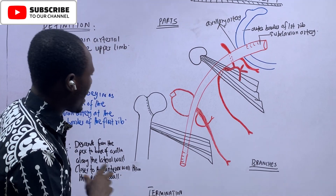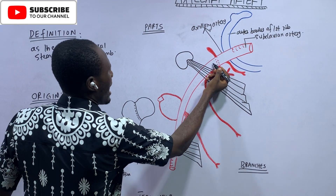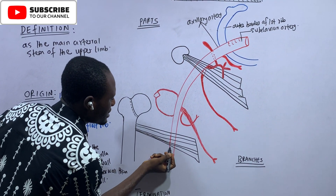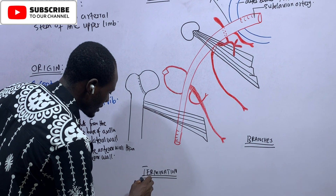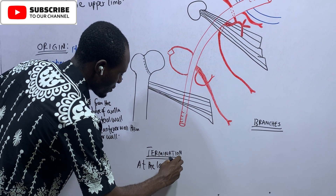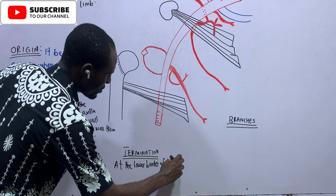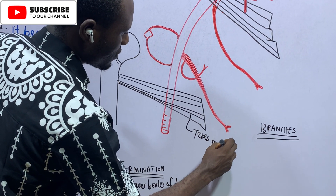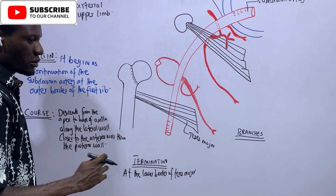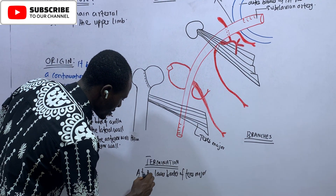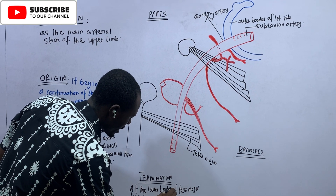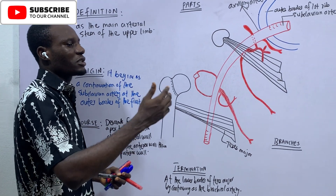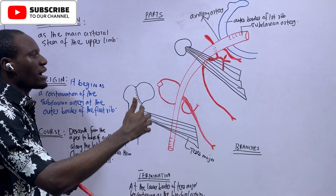Eventually it gets to the arm. Immediately the axillary artery crosses the lower border of the teres major, the name changes — that is the termination of the axillary artery. So the axillary artery terminates at the lower border of the teres major, and once it terminates there, it continues as the brachial artery. So: subclavian artery → axillary artery → brachial artery.